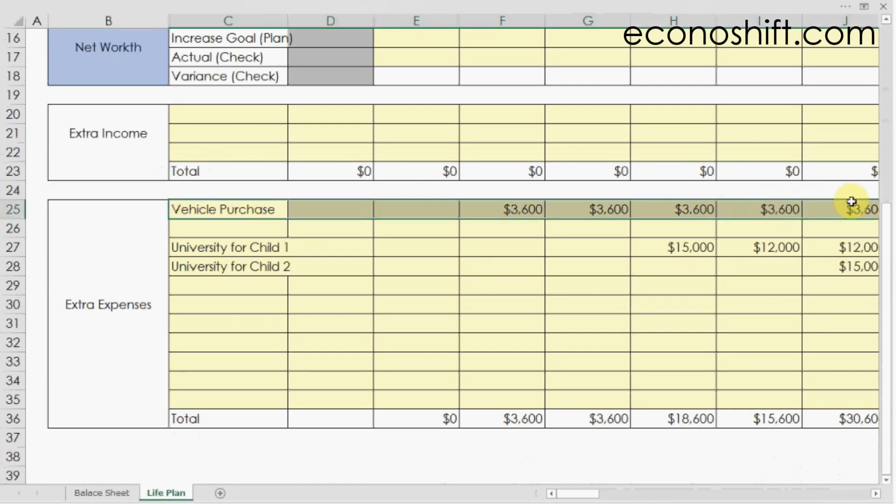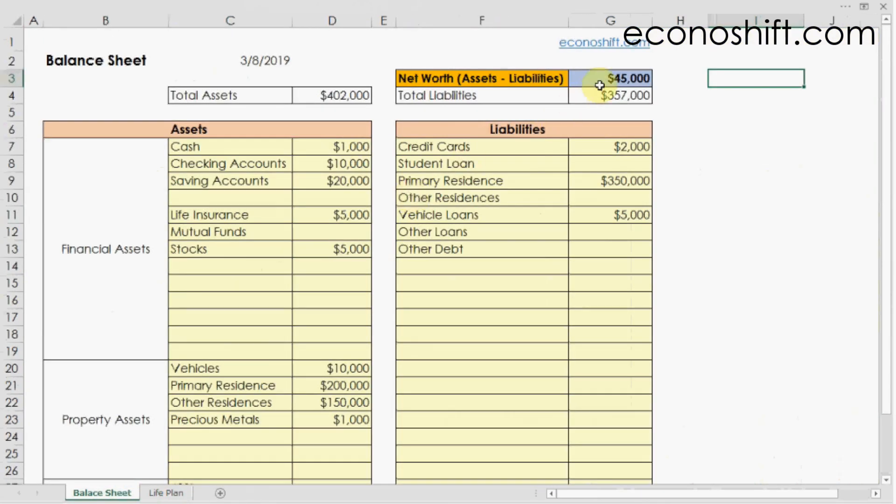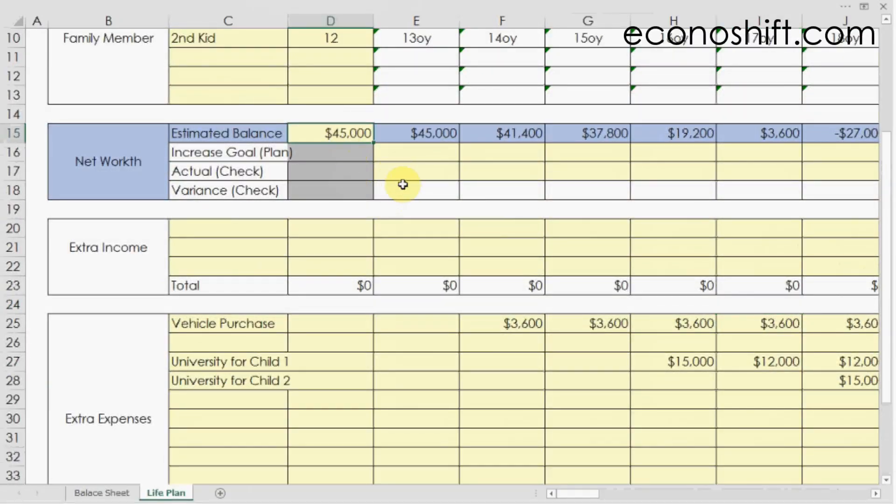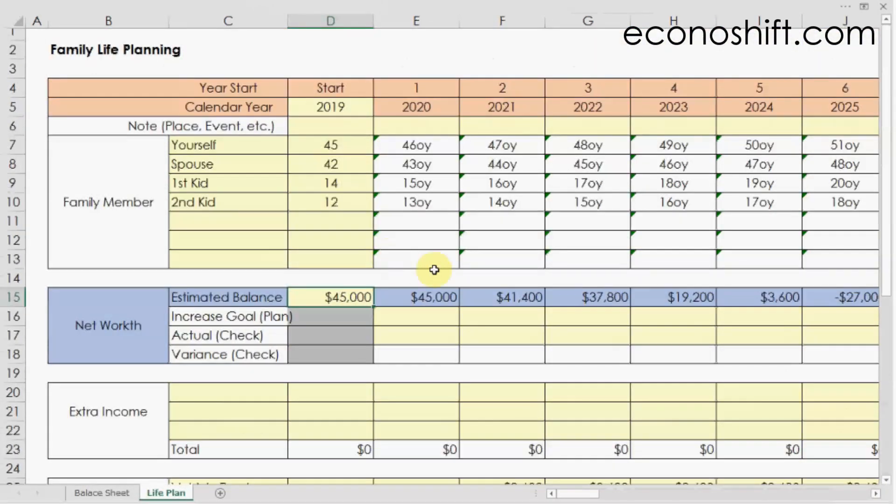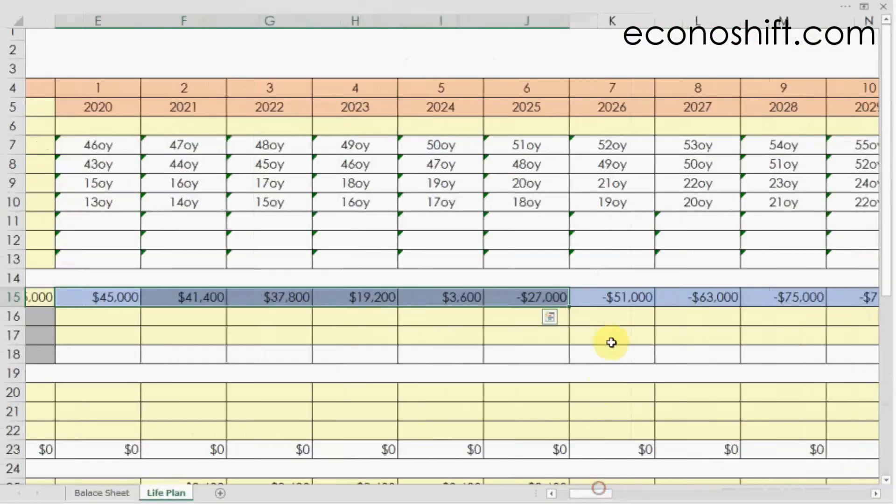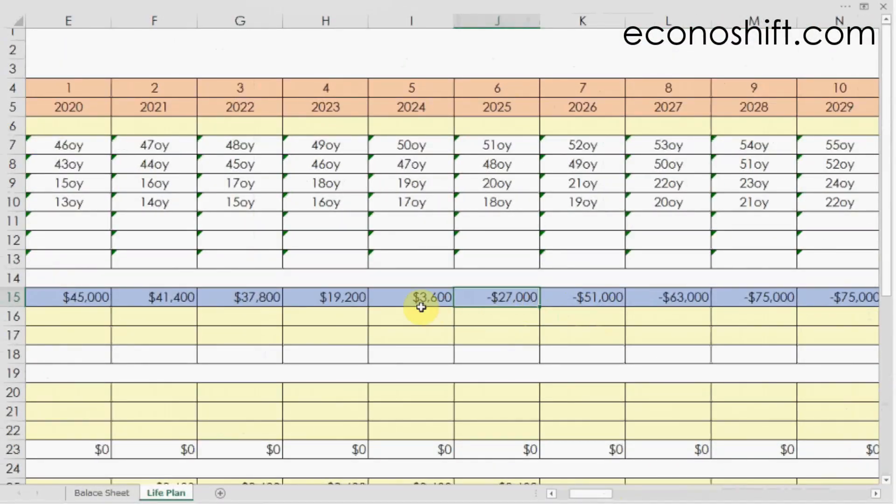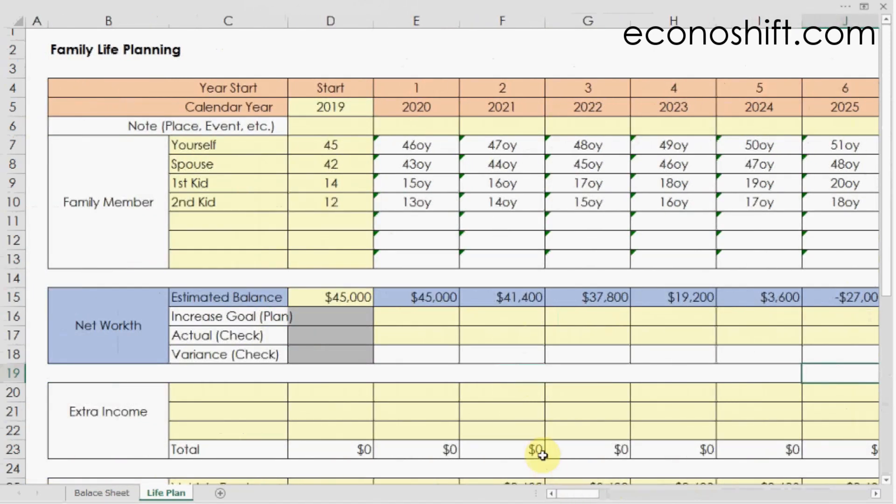For example, when buying a car or a house or when a child goes to university. You copy the net worth amount that you got earlier and paste it into cell D15. Each future year's estimated net worth will come up. Since there are large expenses in the future, the net worth will decrease at those times. In this example, some of them became negative numbers. Therefore, in preparation for those times, you have to save money every year from now on.